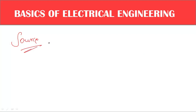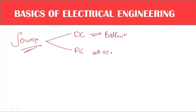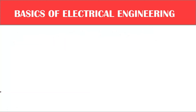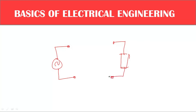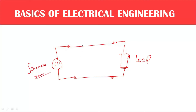In electrical terminology, there are two types of sources: DC and AC. For DC, for example, we use a battery. For AC, for example, we use an AC generator or alternator. We can represent these with symbols — the DC symbol and the AC symbol. In a simple electric circuit, we choose a source with two terminals, a load, and connect them using a conductor or wire. These are the basic circuit symbols for DC and AC sources.